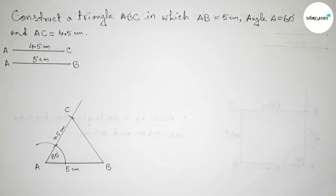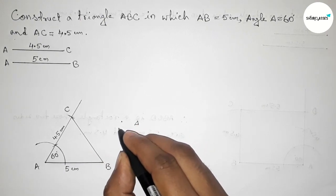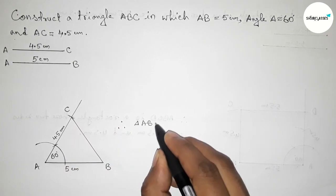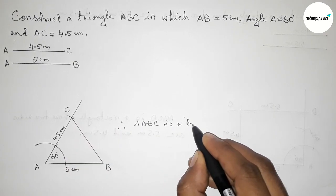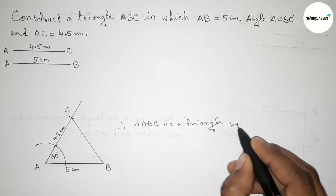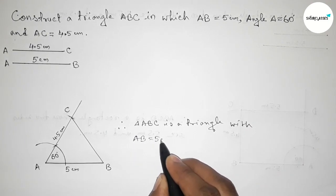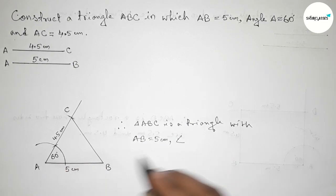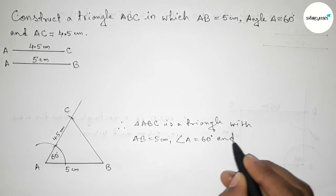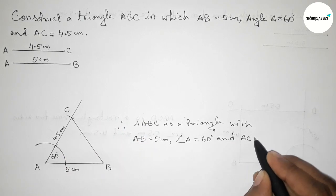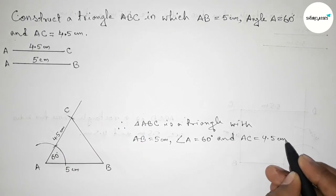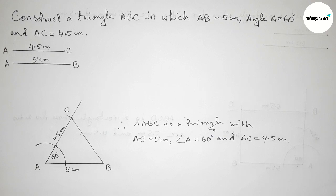Therefore, triangle ABC is constructed with AB equals 5 centimeter, angle A equals 60 degree, and AC equals 4.5 centimeter. That's all — thanks for watching. If this video is helpful to you, please share it with your friends.